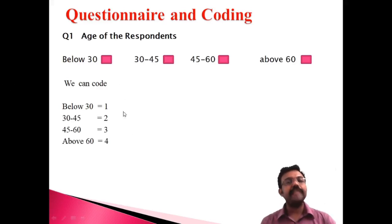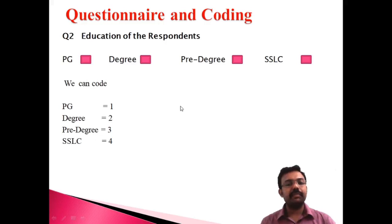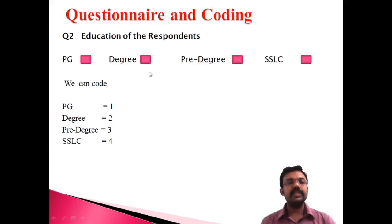Similarly, the second question is education of the respondent. The options are PG, degree, pre-degree, and SSLC. Coding is done the same way: PG is 1, degree is 2, pre-degree is 3, and SSLC is 4. If the respondent clicks degree, that means 2; PG means 1; pre-degree means 3; SSLC means 4. Education can be coded as 1, 2, 3, 4 because there are four options — PG, degree, pre-degree, and SSLC.